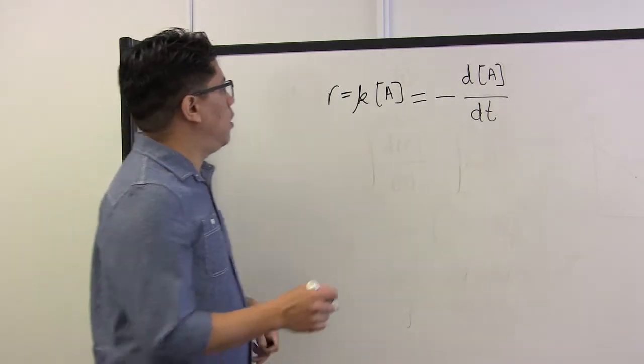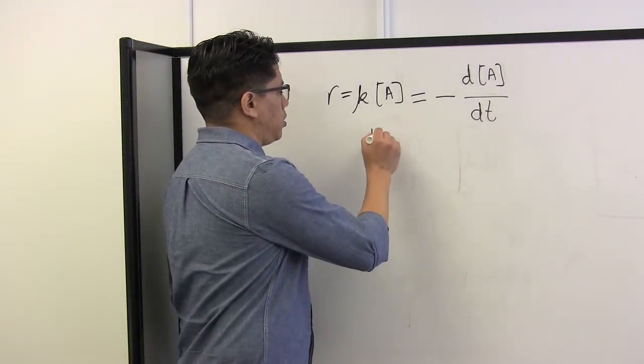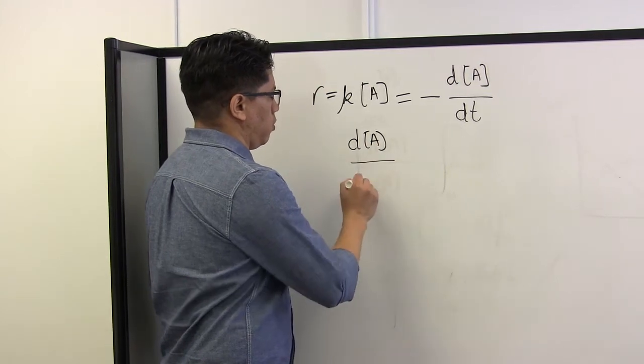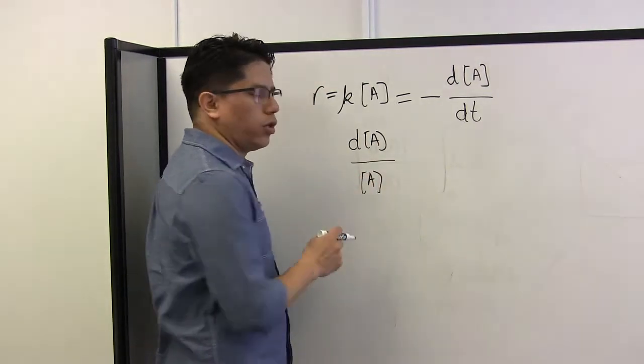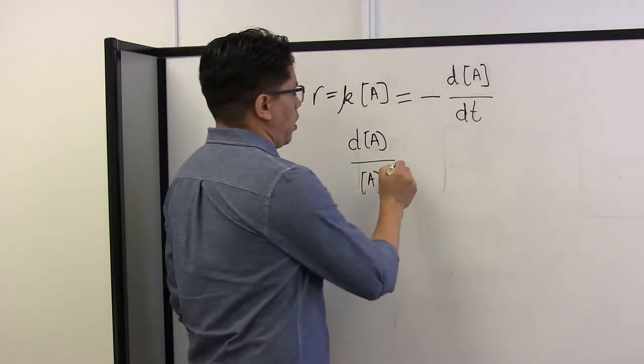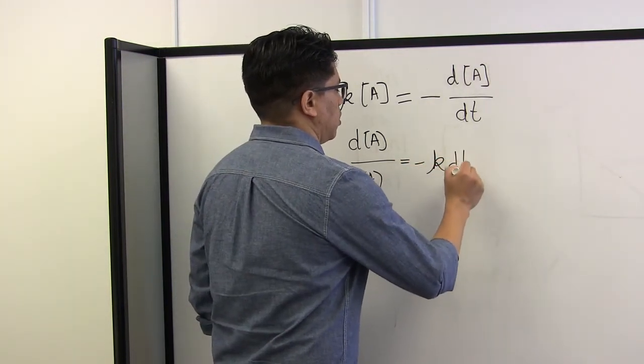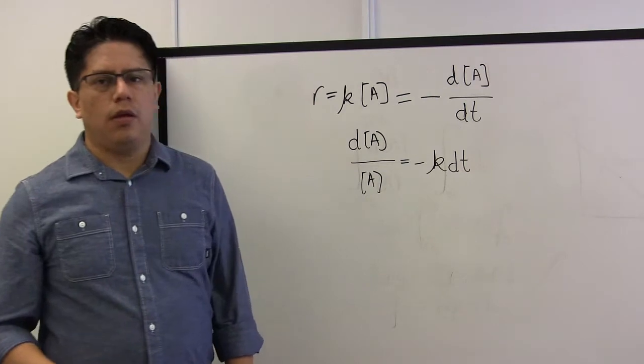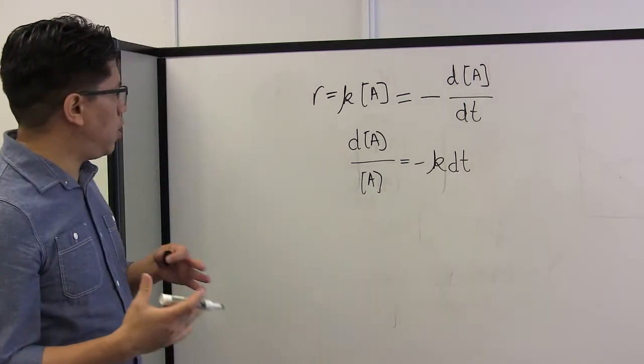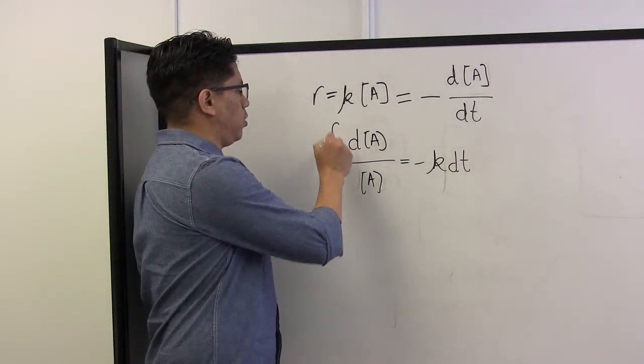So I'm going to rearrange this: the differential of the concentration over the concentration. I'm just putting the similar terms together, and then I'm going to have minus the kinetic constant times the time differential. Now that I have the terms on the same side I'm going to integrate this to get rid of the differential.